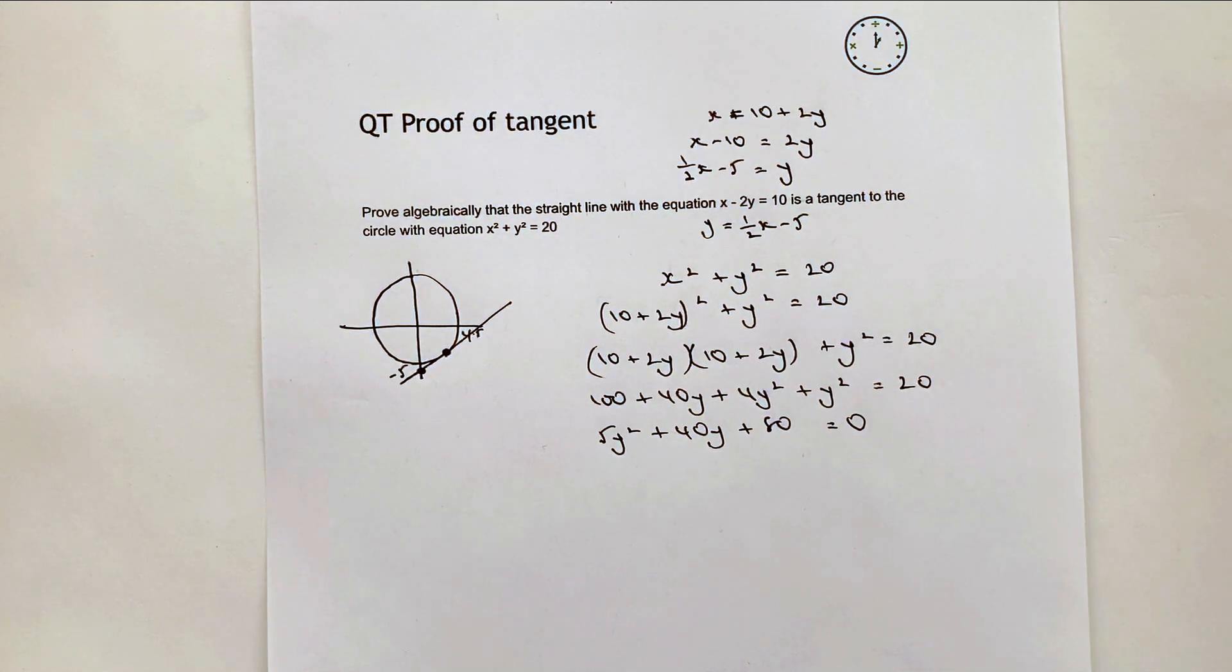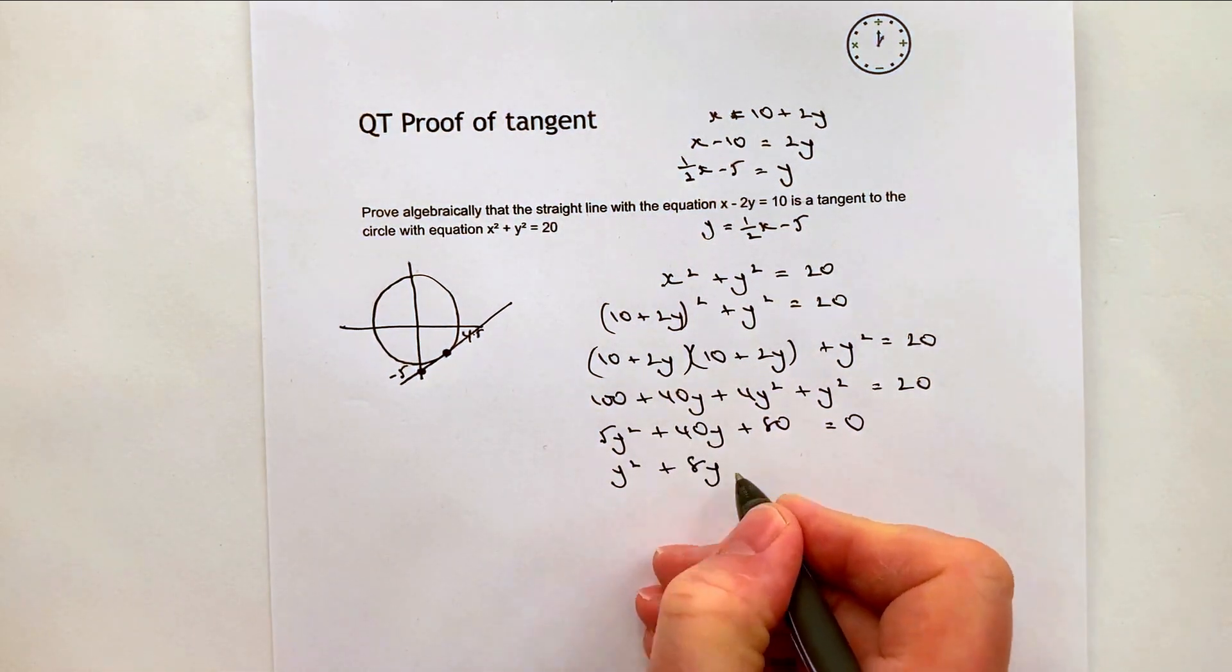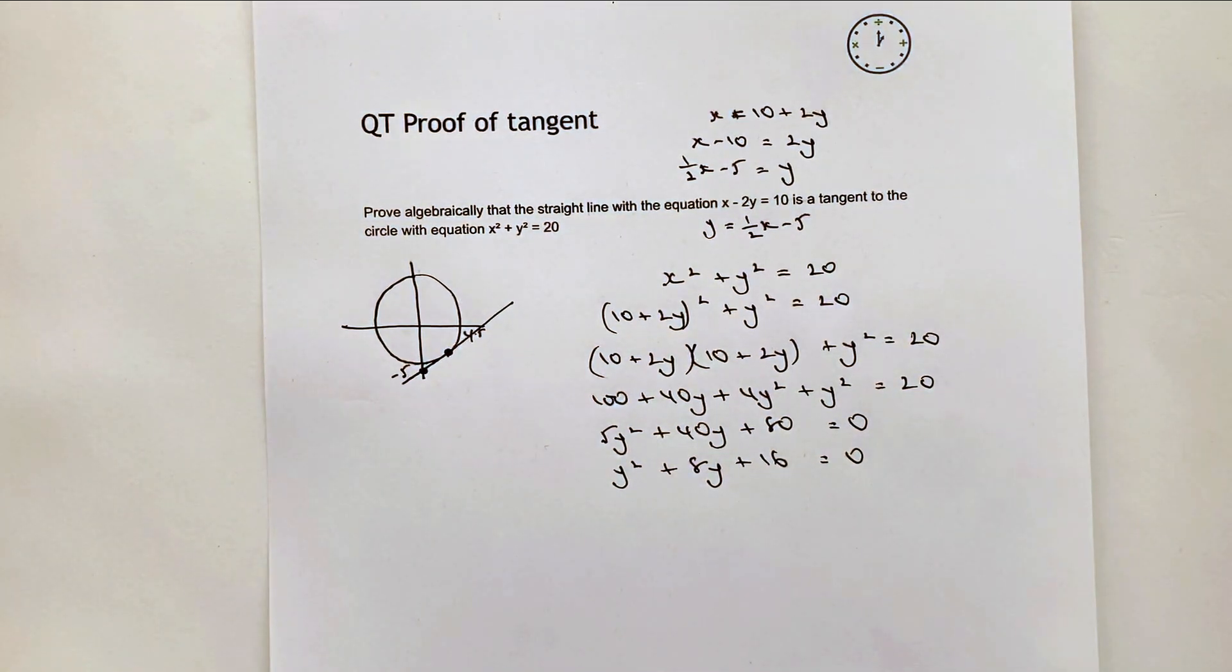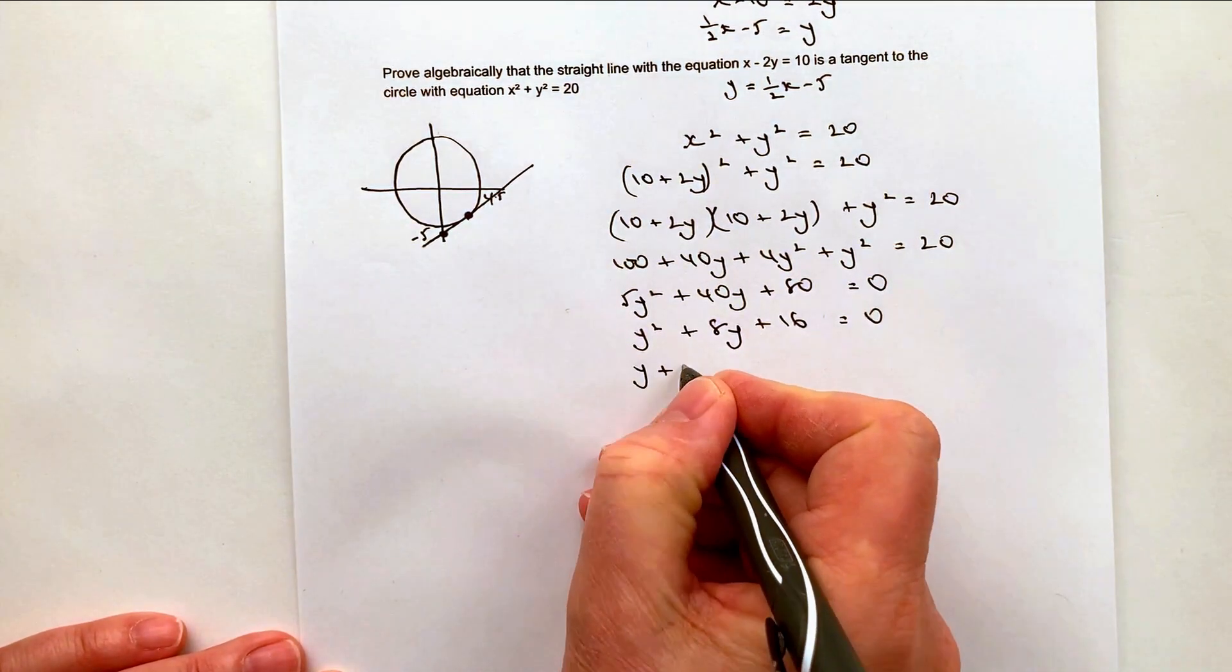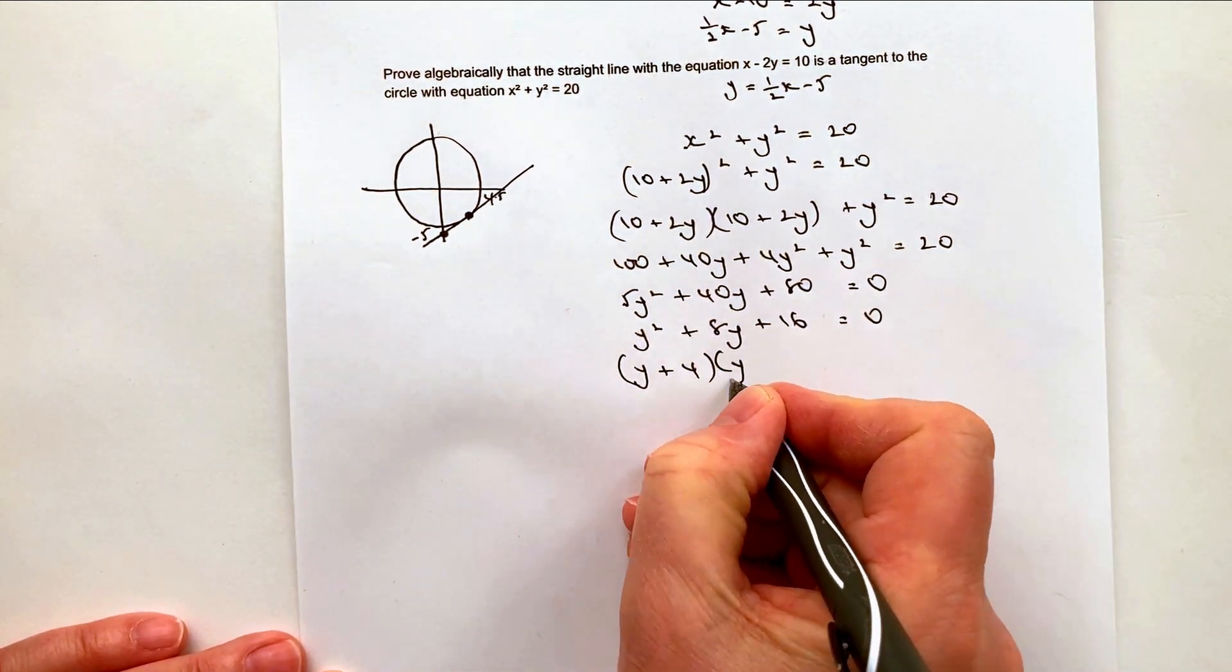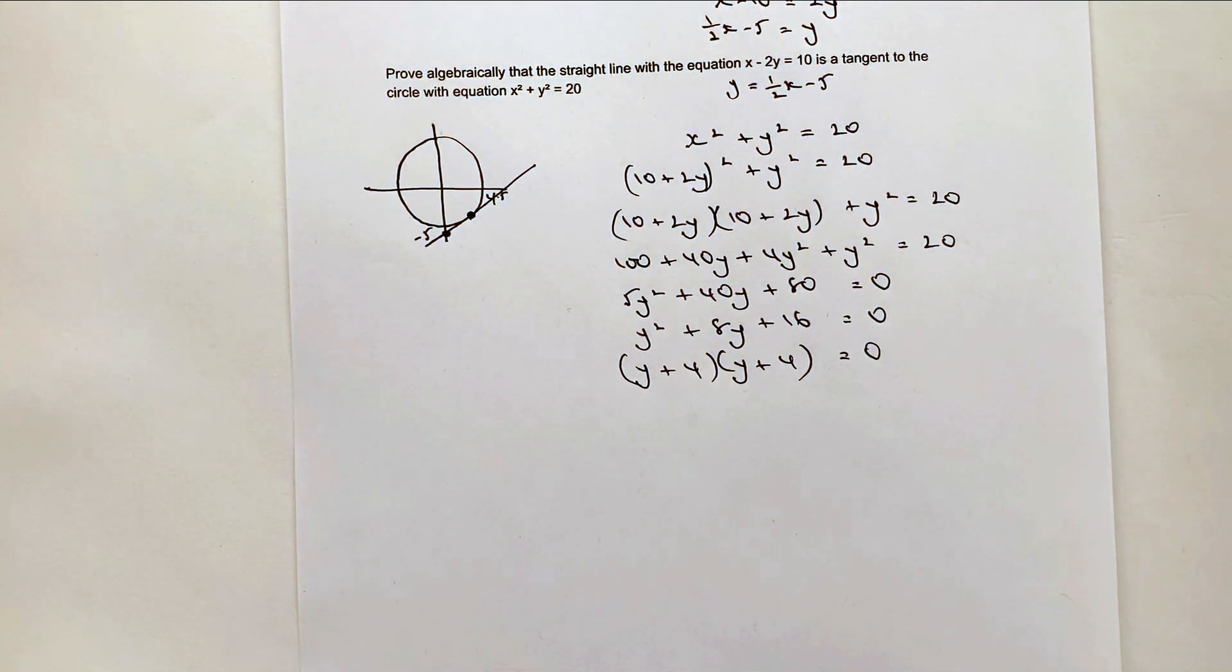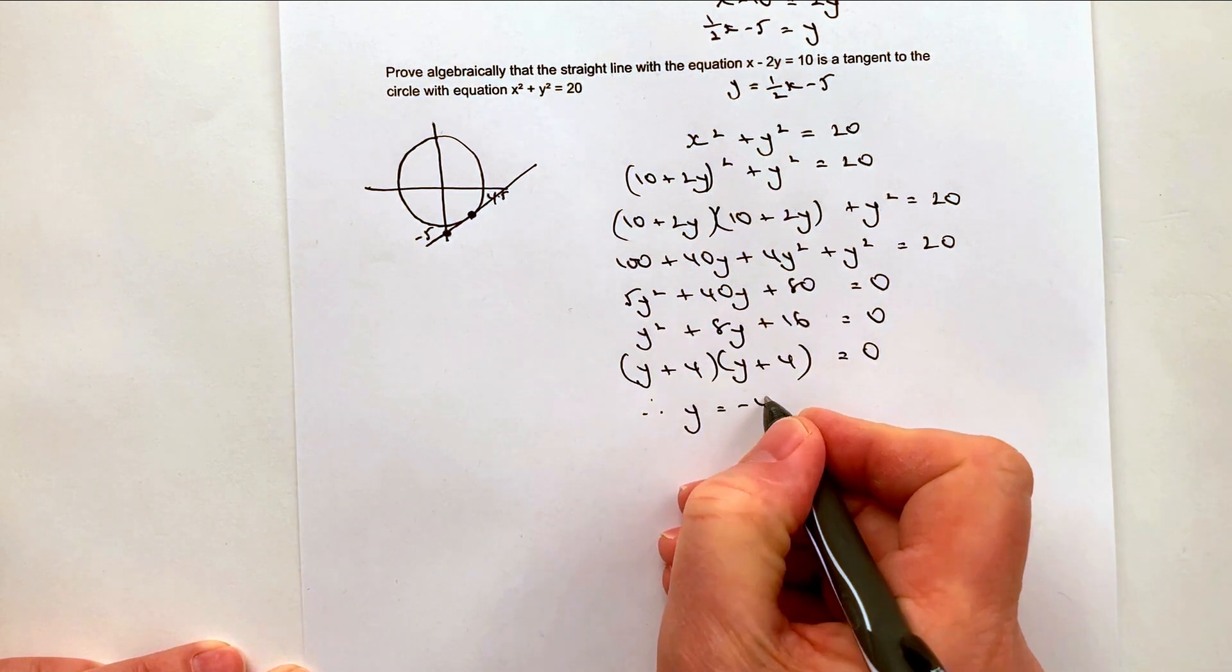Now all of these are divisible through by 5. So I can rewrite this as y squared plus 8y plus 16 equals 0. That's great, because we can factorize that relatively well to (y plus 4) multiplied by (y plus 4) equals 0. So on this particular set of equations, y must equal minus 4.